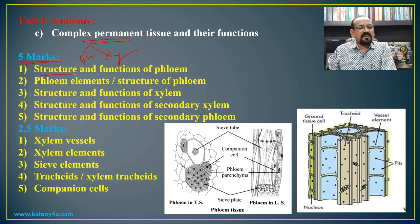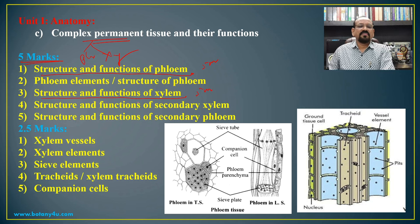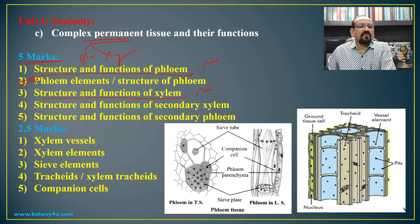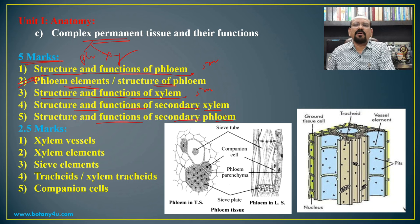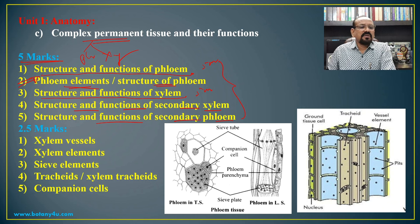For 5 marks, questions are asked on structure and functions of phloem, and structure and functions of xylem. Earlier examination questions include phloem elements, structure of phloem, structure and functions of secondary xylem, and structure and functions of secondary phloem. The wording changes but the answer is essentially the same — structure and functions of phloem or xylem.